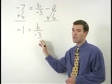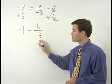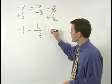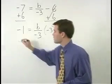To get B by itself, since B is being divided by negative 3, we just multiply both sides of the equation by negative 3.